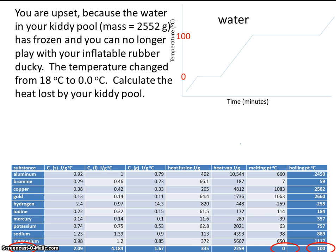Now let's read the problem carefully one more time. The water in your kiddie pool, mass of 2,552 grams, has frozen. That's a key word right there. The temperature changed from 18 degrees C to 0 degrees C. Calculate the heat lost by your kiddie pool.